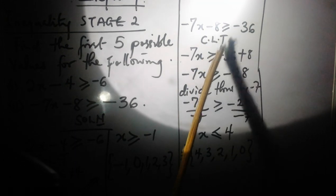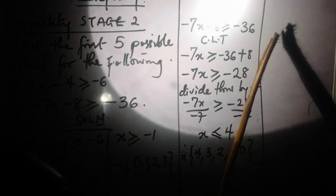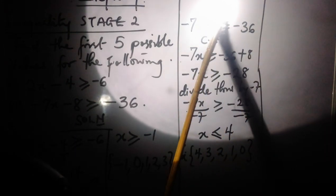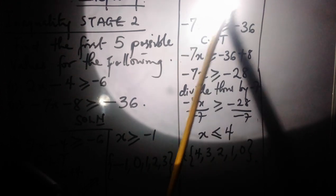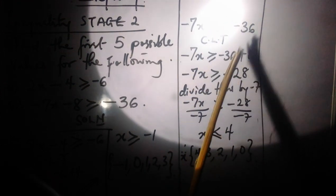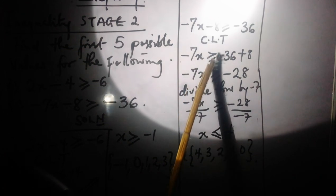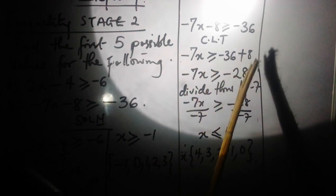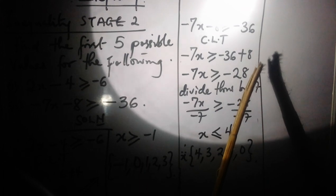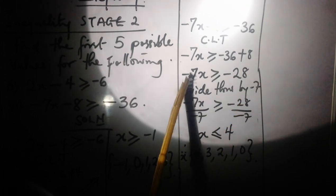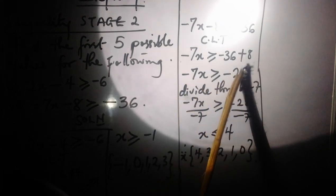Collect the like terms. They have to be on one side of the inequality. This one has no x. So -7x stands alone, greater than or equal to -36 plus 8. That gives me -7x greater than or equal to -28.